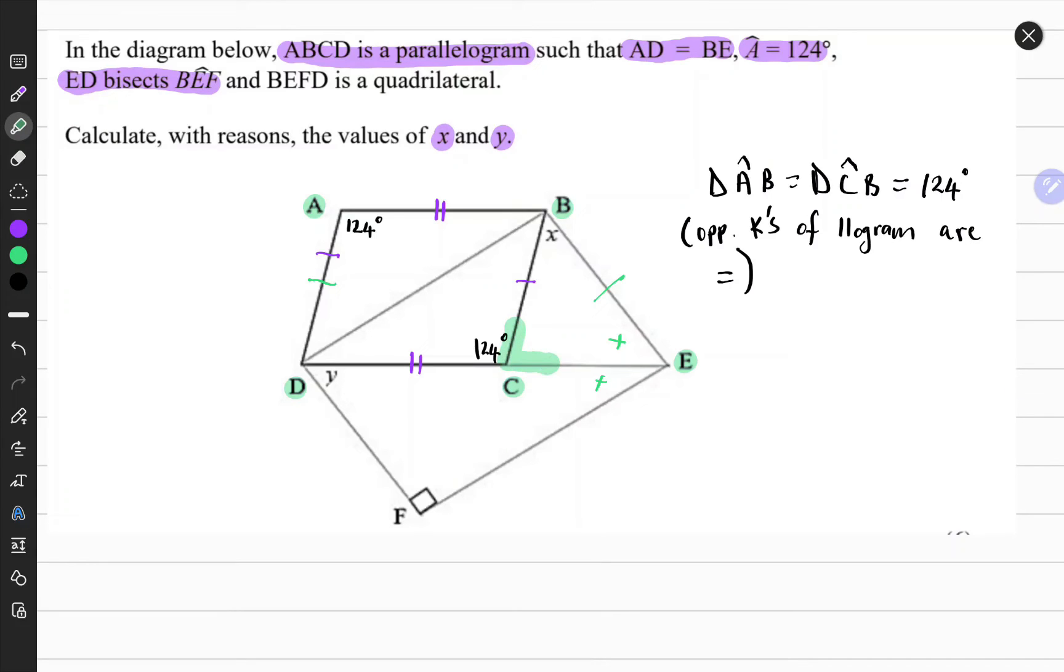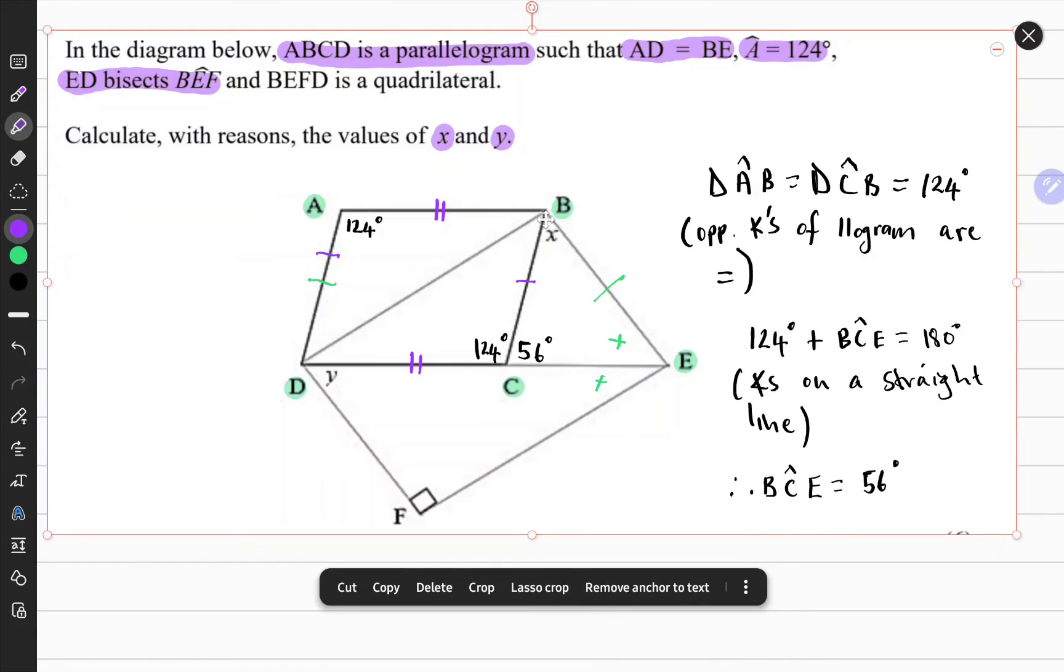Now it becomes easy to identify angle BCE by virtue of angles on a straight line adding up to 180 degrees. The sum of these two angles should give us 180 degrees, so therefore angle BCE should be 56 degrees.